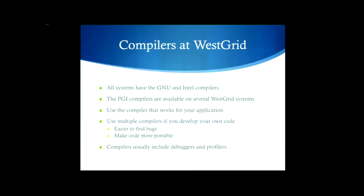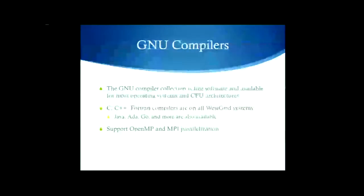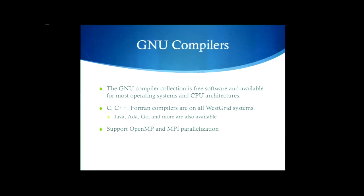Using multiple compilers also makes your code more portable. The chances are, if it compiles nicely with a few compilers right now, it's probably going to compile relatively well on future compilers as well. Compilers usually include more than just the compiler itself — you should have debuggers, profilers, and other tools as part of the compiler suite. The GNU compilers, available at all WestGrid sites, is a collection of compilers and tools. It's free software available for most operating systems and CPU architectures, which makes it very portable. We have C, C++, and Fortran compilers on all WestGrid systems, and on some systems we also have the other GNU compilers including Java, Go, and other languages.